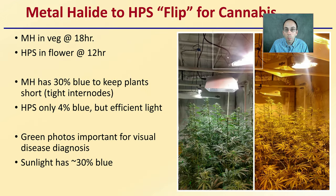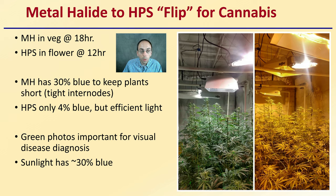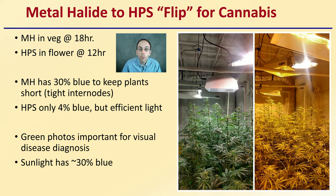Looking at metal halides to HPS — the flip for cannabis. Some people grow under metal halide during veg and then flip to high pressure sodium for the flowering stage: metal halide for 18-hour days and HPS in flower for 12 hours. Metal halides have about 30% blue to keep plants short with tight internodes. HPS only has about 4% blue, but it's still a very efficient light because of the red-orange spectrum it produces. Green photons are important for visual disease diagnosis, and sunlight also has about 30% blue light.